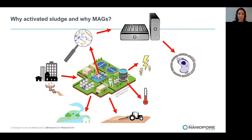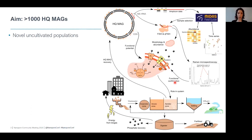This is a microbial process — a complex community of microorganisms that undertake all of these processes. Since we can't actually isolate many of them, we use metagenome sequencing. We are using nanopore sequencing in order to recover genomes for these organisms, and our aim was to recover over 1,000 high-quality metagenome-assembled genomes from novel, uncultivated populations.